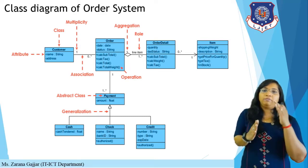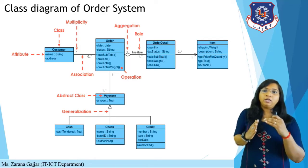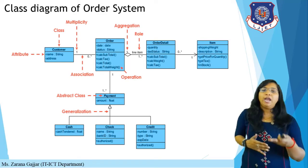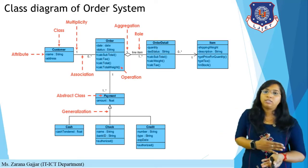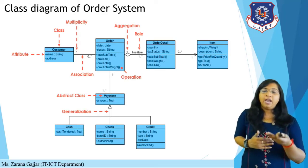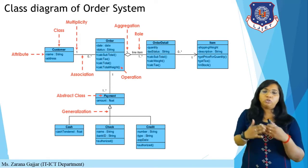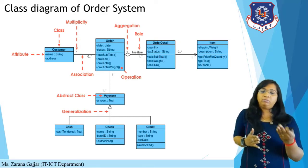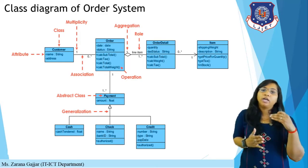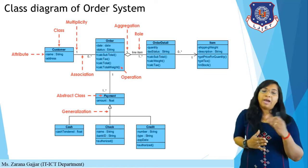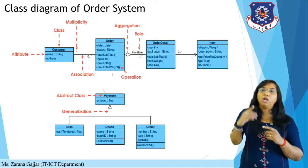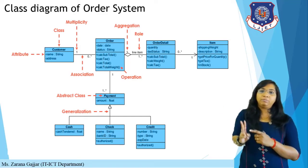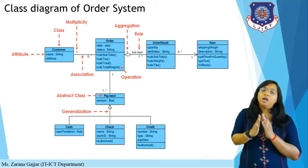The order class has attributes like date and status — the date the customer ordered food and the status whether it is pending or successfully delivered. Operations include subtotal and total. The order detail class specifies what items a customer is ordering and how many. A diamond symbol at the order class indicates aggregation — order and order detail are aggregated with each other.